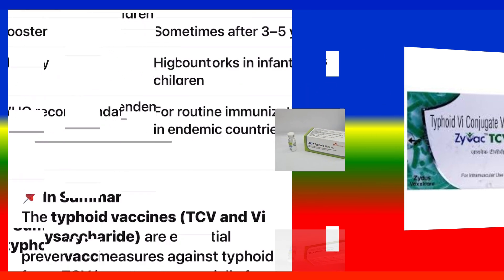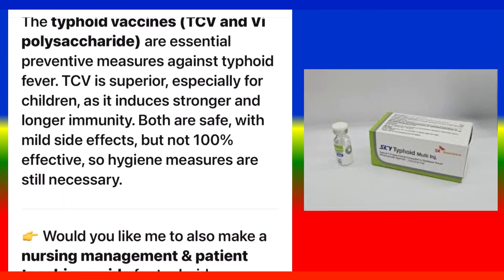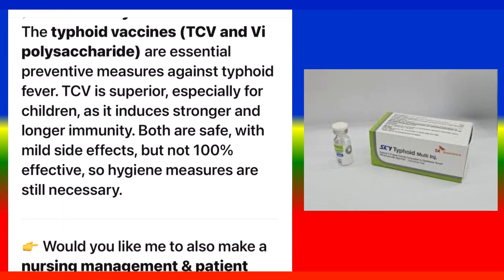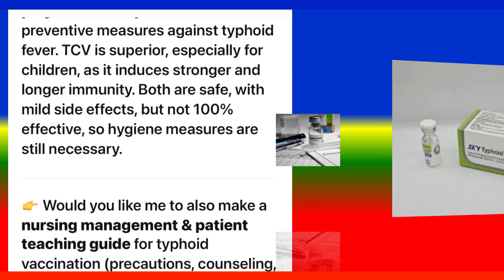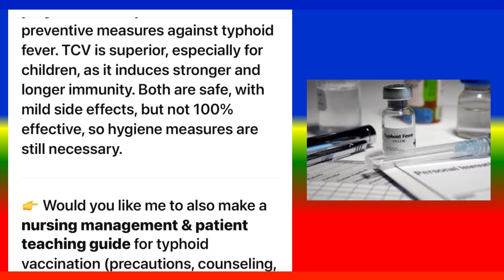In summary, the typhoid vaccines — TCV and Vipolysaccharide — are essential preventive measures against typhoid fever. TCV is superior, especially for children, as it induces stronger and longer-lasting immunity. Both are safe with mild side effects but are not 100% effective, so hygiene measures are still necessary.